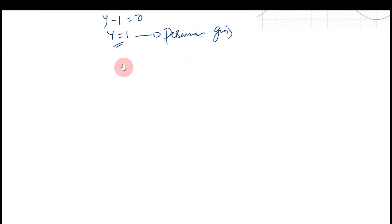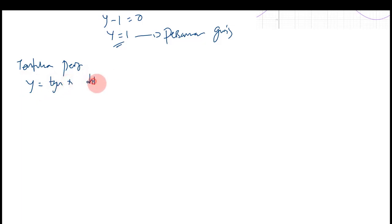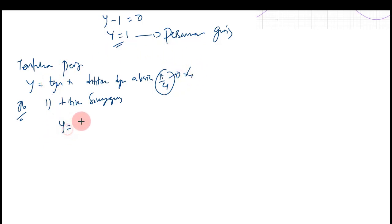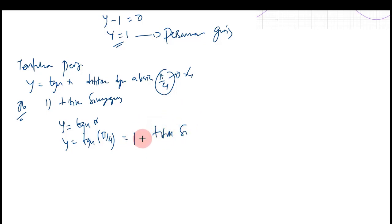Soal selanjutnya: tentukan persamaan garis singgung Y sama dengan tangen X di titik dengan absis π/4. Jawab — langkah pertama, menentukan titik singgung. X1 = π/4 kita substitusi ke Y sama dengan tangen X. Maka Y sama dengan tangen dari π/4 sama dengan 1. Maka titik singgungnya kita peroleh.